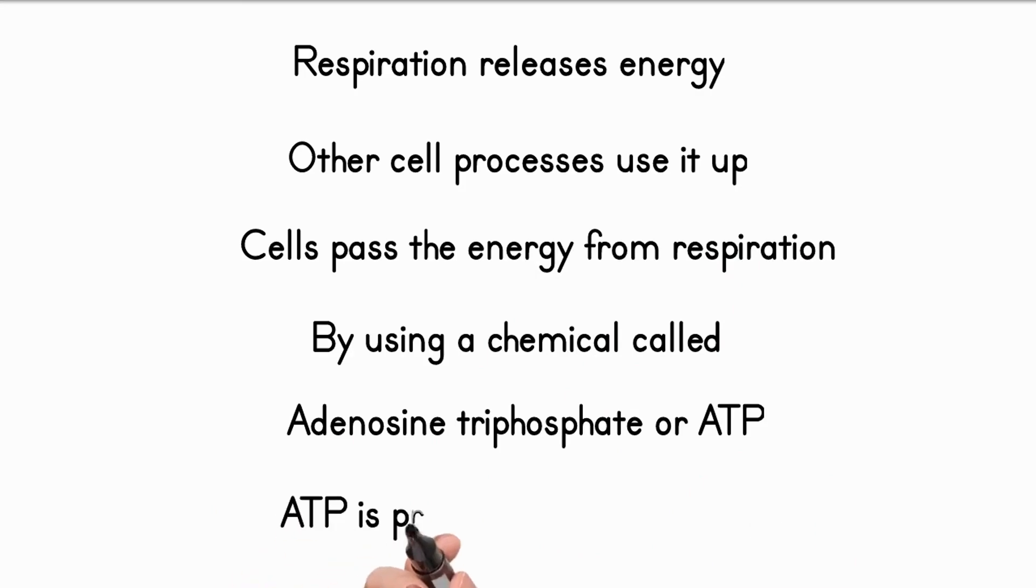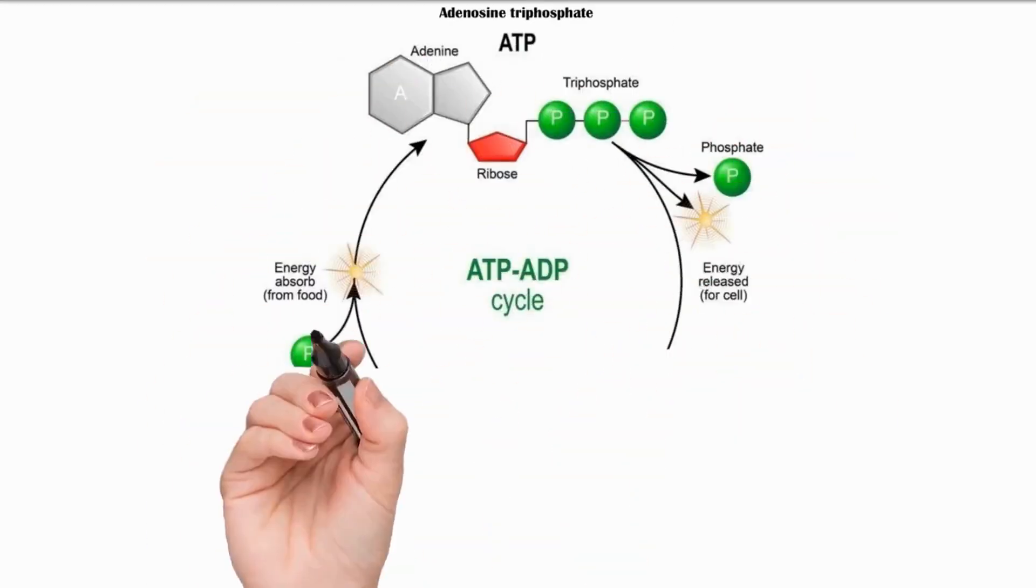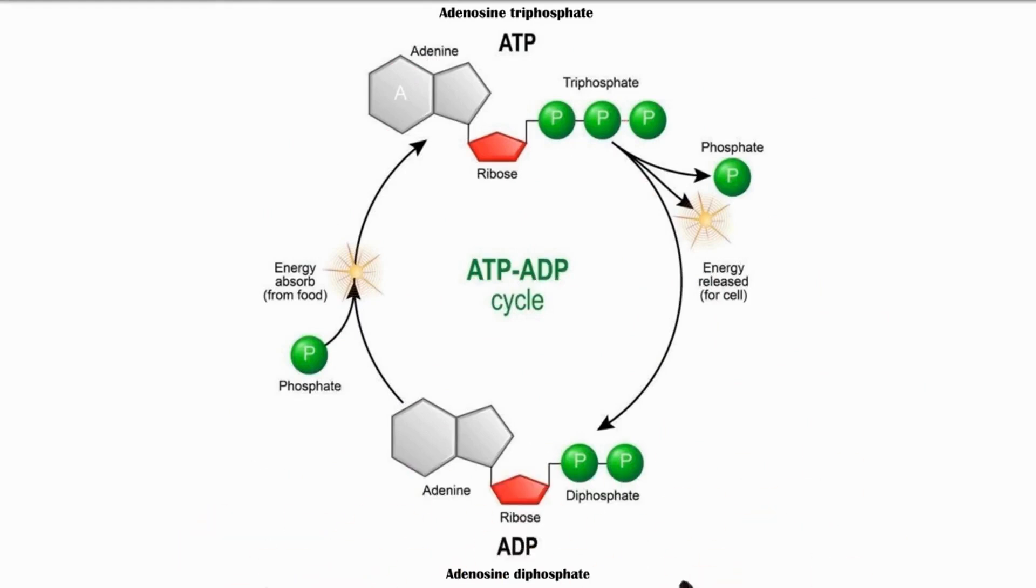ATP is present in all living cells. ATP is composed of an organic molecule called adenosine attached to three phosphate groups.